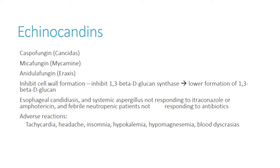These are going to work like a lot of our other antifungals — against the cell wall — because the fungal cell wall is different from bacteria, which is why we need different types of drugs. They work against 1,3-beta-D-glucan synthase, decreasing the amount of 1,3-beta-D-glucan, which inhibits the cell wall from functioning. So just know these are cell wall inhibitors for fungi.